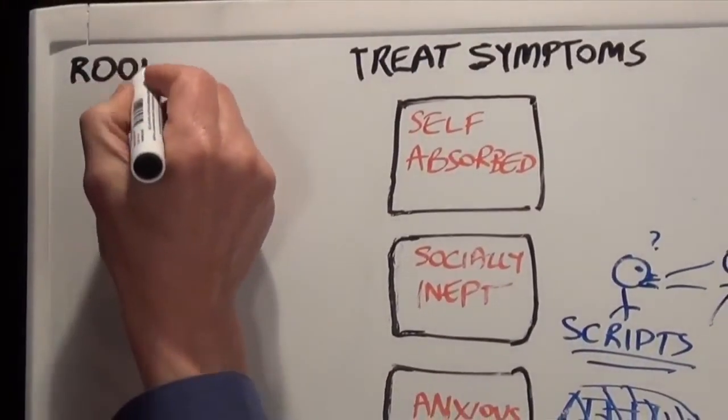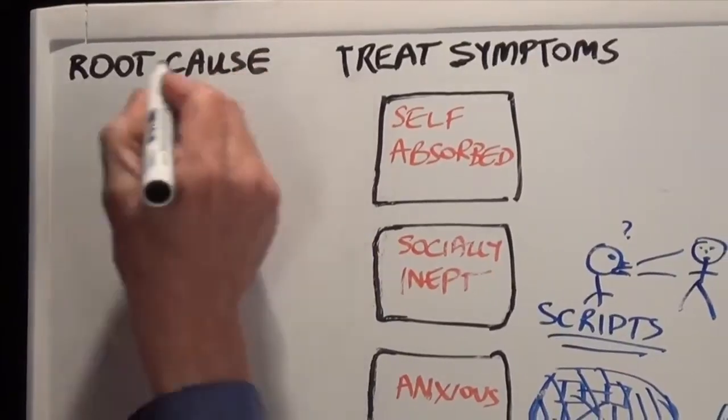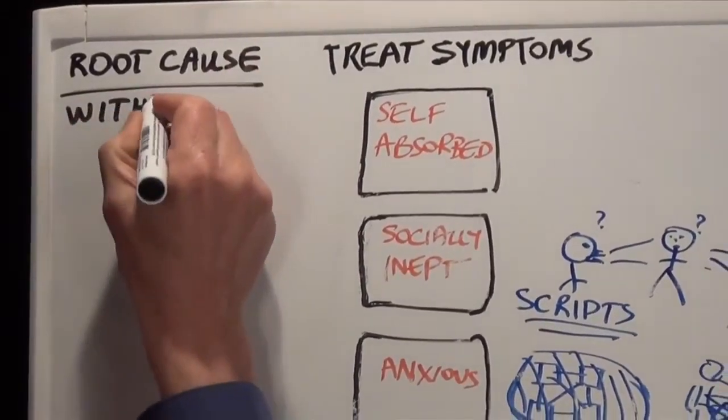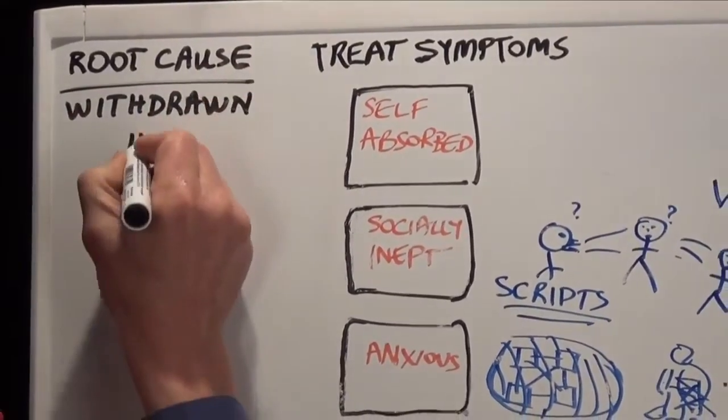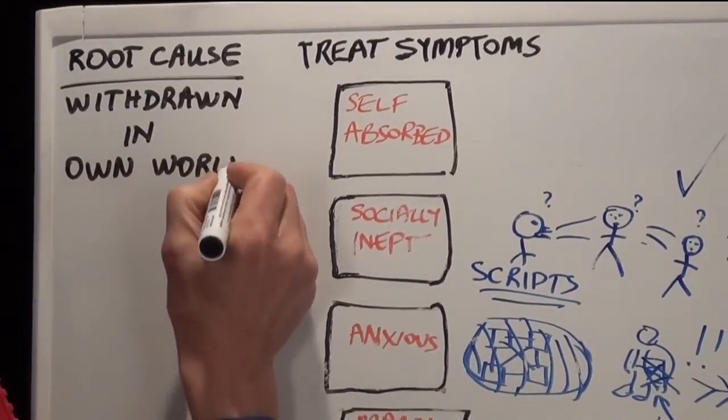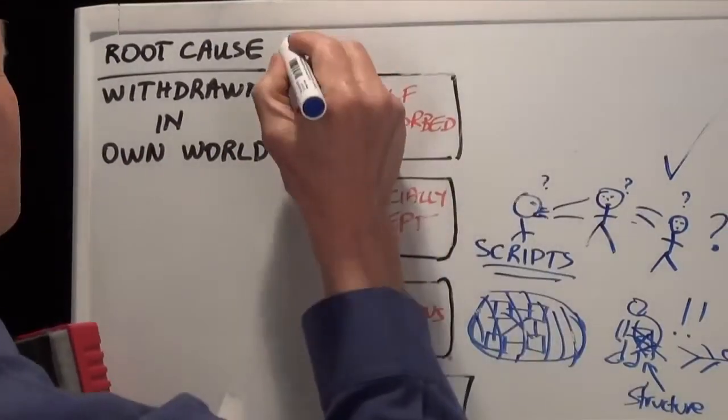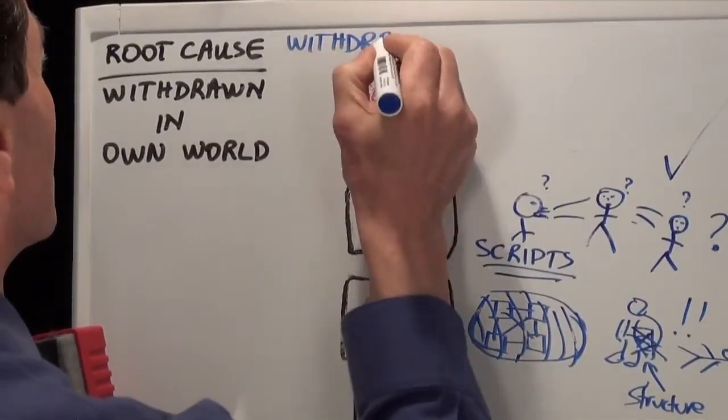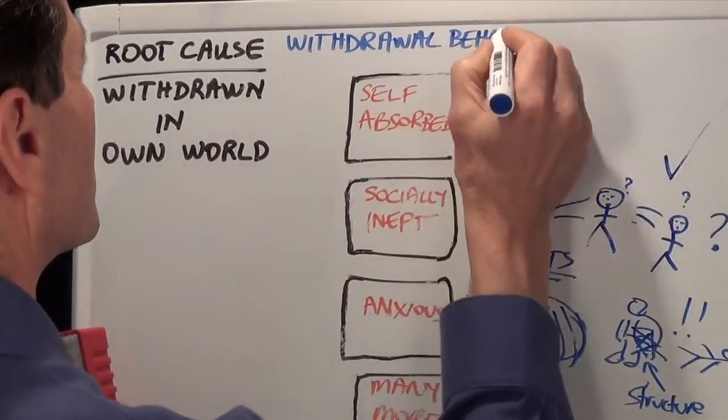So going back to our model, we see the main differences of therapies 2 and 3 is they focus principally on the root cause of autism, that is being more withdrawn in own world, which is, as we've just discussed, reducible.